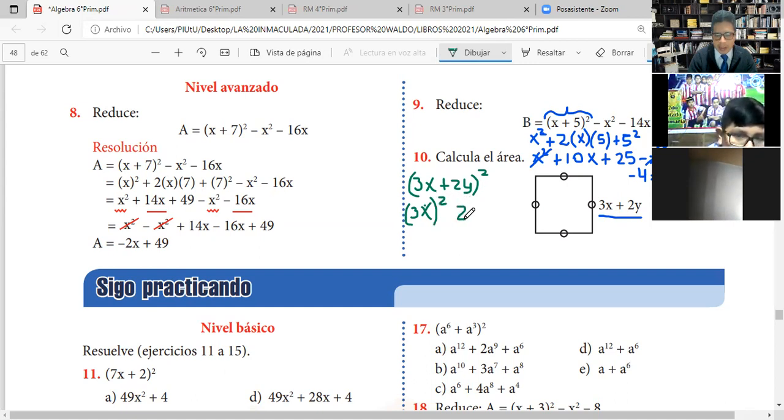Y tenemos así 3X más 2Y elevado al cuadrado. Desarrollo: 3X elevado al cuadrado. Elevado al cuadrado. Aquí tenemos 2 que va a multiplicar al 3X y además al segundo que es 2Y. Y finalmente vas a colocar el segundo que es 2Y elevado al cuadrado. Como es un binomio suma, todos van a ser positivos.